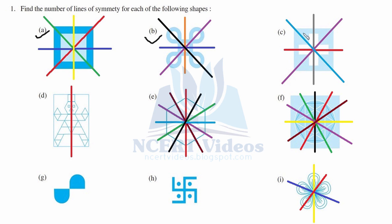Now part C: this is the plus sign, pictorially represented. Here again we have one, two, three, and four possible lines of symmetry.